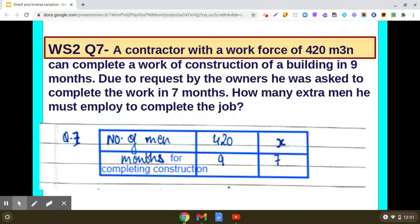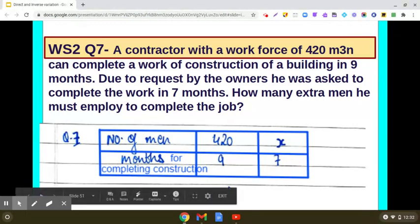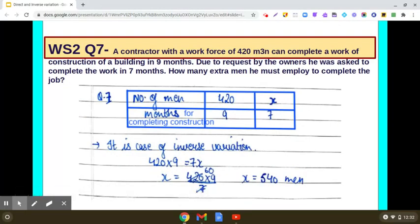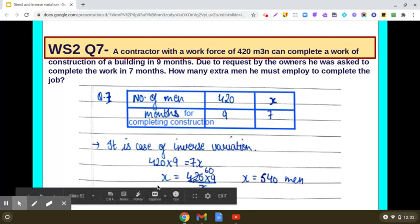Now, in case of inverse variation, 420 into 9 should be equal to x into 7. Because you know that if x and y are two quantities which vary inversely, then the product x, y is constant. So 420 into 9 should be same as x into 7. We will simplify this and we find x, and when you simplify this, x comes out to be 540 men.